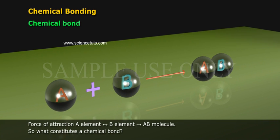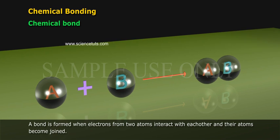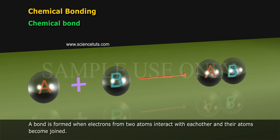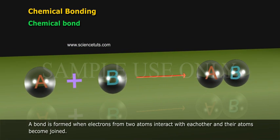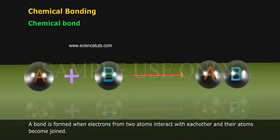What constitutes a chemical bond? A bond is formed when electrons from two atoms interact with each other and their atoms become joined.